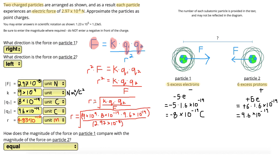When solving these problems, the steps are always the same: identify all given variables including K, the constant 9 times 10 to the power of 9, identify the missing variable, rearrange the equation to isolate that variable, and then substitute in the numbers.